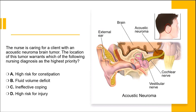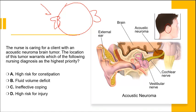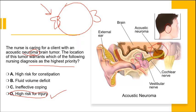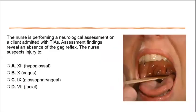Next question: a nurse is caring for a client with an acoustic neuroma. Drawing the ears completes an eight — reminding us that's the acoustic nerve dealing with hearing and balance. A neuroma is a growth pressing on the vestibulocochlear nerve, creating a high risk for falls because this nerve controls balance. The highest priority nursing diagnosis is therefore safety — risk for falls.